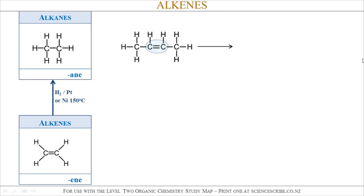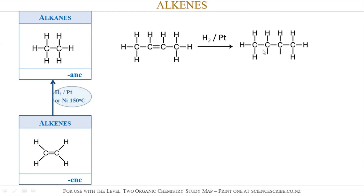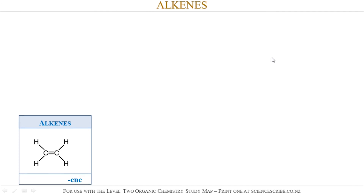Alkenes can also undergo addition reactions with hydrogen using a platinum catalyst, or you can use nickel at 150 degrees. Here's an example with an alkene: the double bond breaks to form a single bond and two new single bonds. In this example, I'm going to use hydrogen with a platinum catalyst — I show that by using a slash. Hydrogen is called the reagent and the platinum catalyst is our reaction condition. This just adds hydrogen across the double bond.